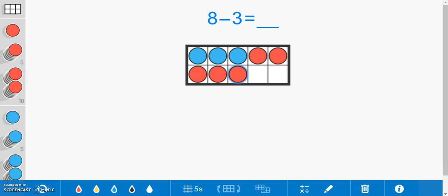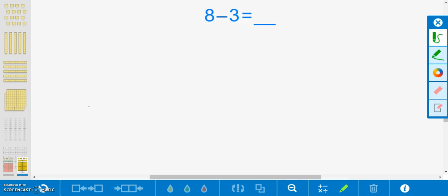If you know the whole and one of the parts, you can take away or subtract the known part from the whole to find the missing part. In this concrete representation, however, we built one part and counted up to find the missing part.